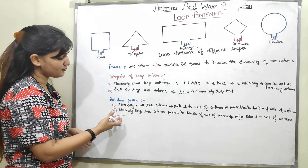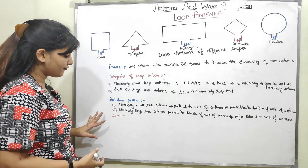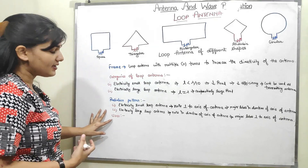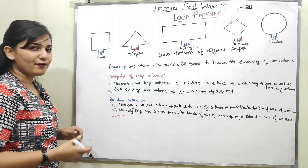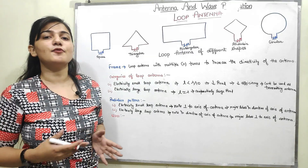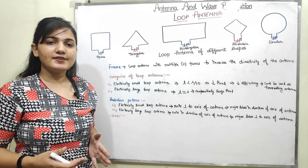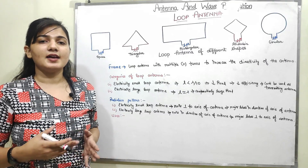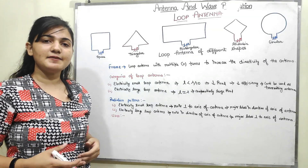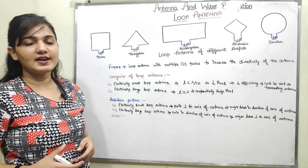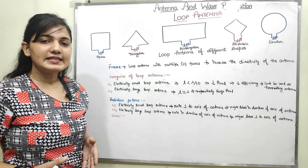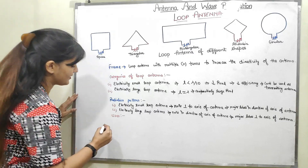The first use of the loop antenna is in radio receivers, because in receivers the noise factor is more important — we want less noise and more signal, so the SNR factor is really important for receiving antennas. Loop antennas can easily be used in radio receivers.